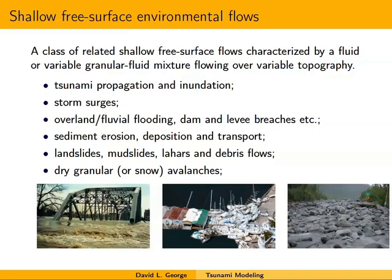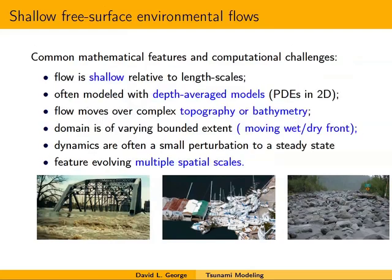There's a class of related shallow free surface flows characterized by a fluid or variable granular fluid mixture flowing over variable topography. I think of tsunamis as belonging to this broader class of problems, which includes tsunami propagation and inundation, storm surges, regular overland flooding, levee breaches, sediment erosion and deposition, landslides or debris flows with variable mixtures of fluid and solid grains, and even dry snow avalanches. Beyond being hazardous, they share many common mathematical features and computational challenges.